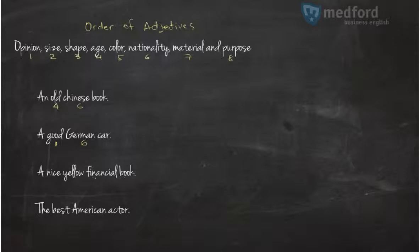A nice yellow financial book. Nice is my opinion. Yellow is the color, number 4. Financial is the purpose, number 8. So I have to put it in this order.